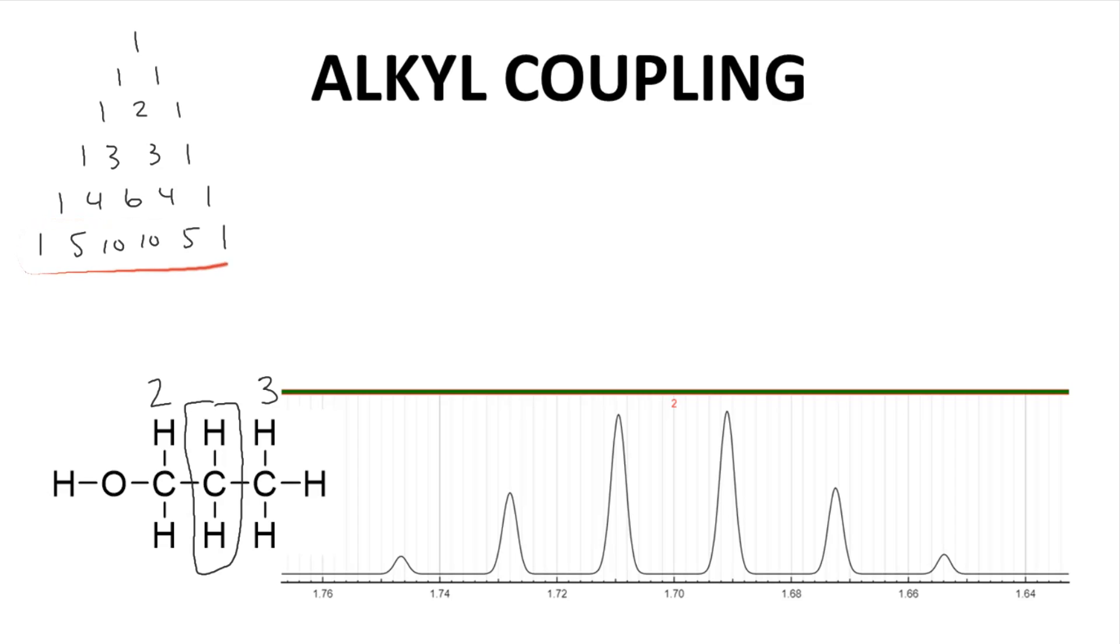The n plus 1 rule says the multiplicity should be 6, sextet. The predicted relative intensity should be 1, 5, 10, 10, 5, 1, based on Pascal's triangle. That's roughly what we see here. The J value, or coupling constant for this sextet, is about 7.4 hertz. Coupling for alkyl chains is very predictable.